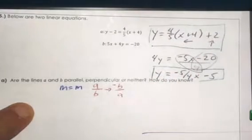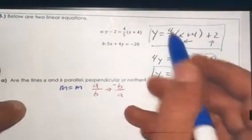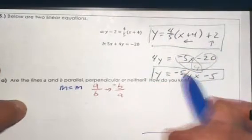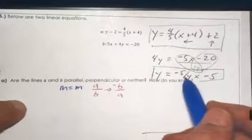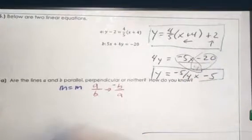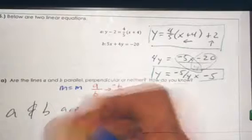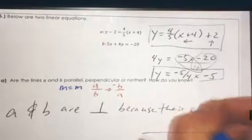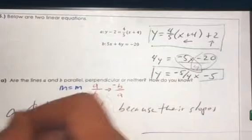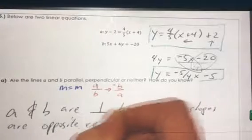So there are two lines, and we see that four-fifths and negative five-fourths have the opposite reciprocal relationship. So A and B are perpendicular because their slopes are opposite reciprocals.